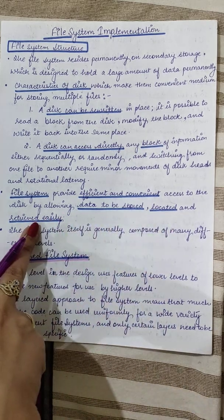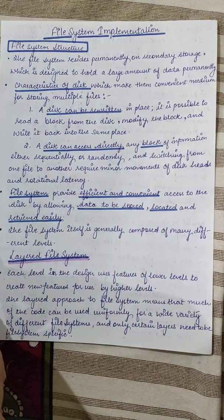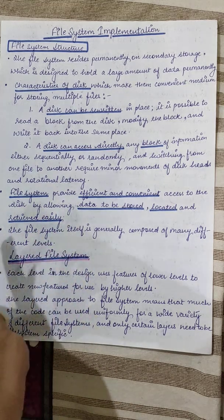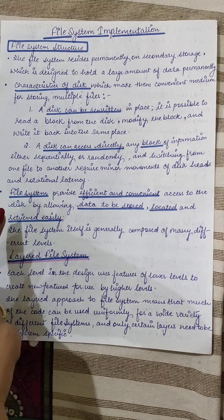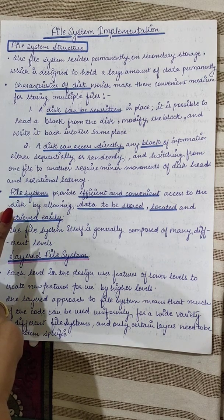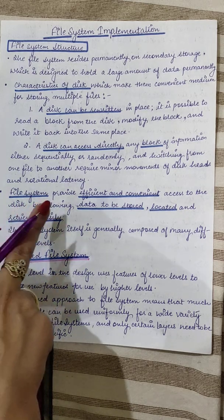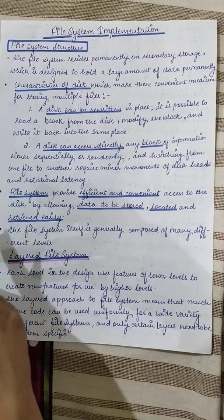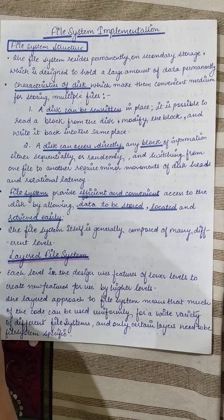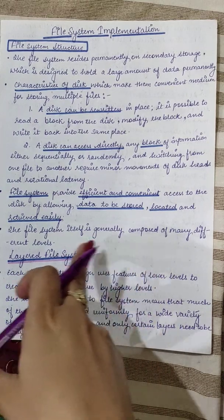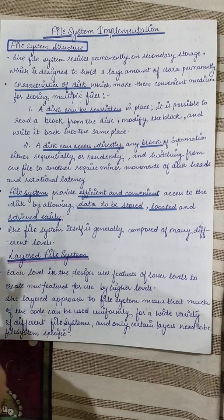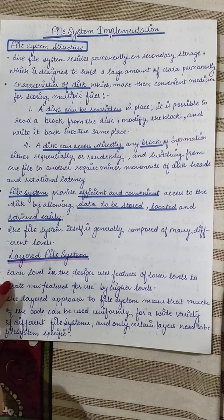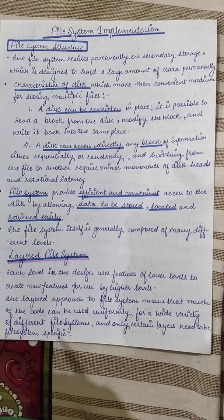The file system provides efficient and convenient access to the disk by allowing data to be stored, located, and retrieved easily. Without a file system, it would not be easier for the user to identify where the data of one file begins and where another file ends. The file system itself is generally composed of many different levels, which is also referred to as the layered file system.